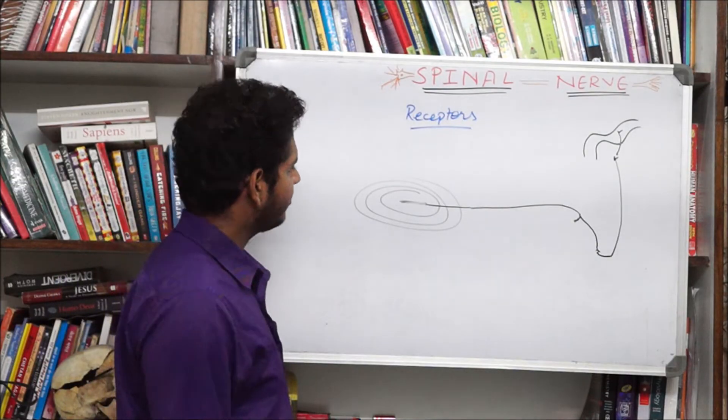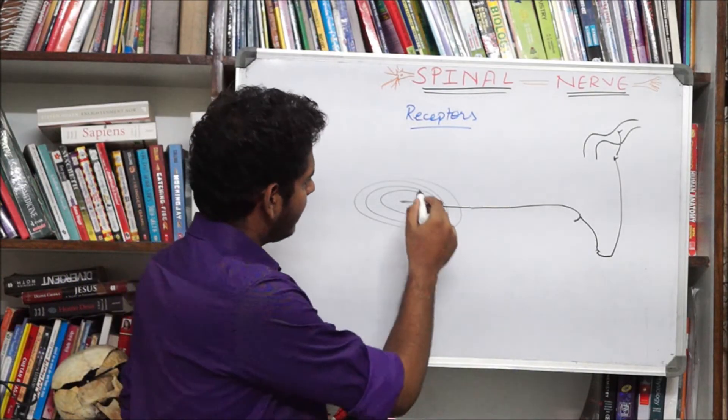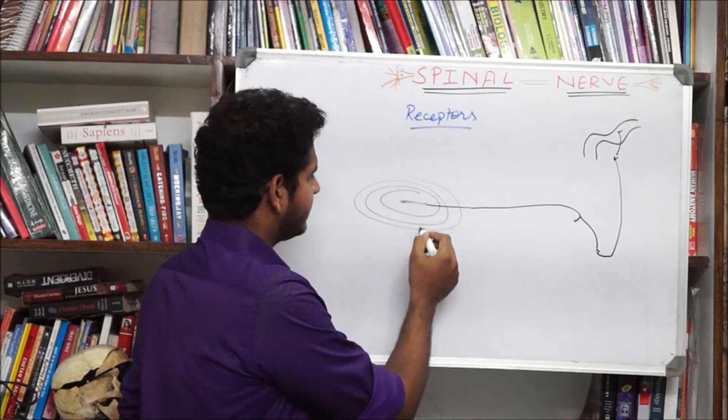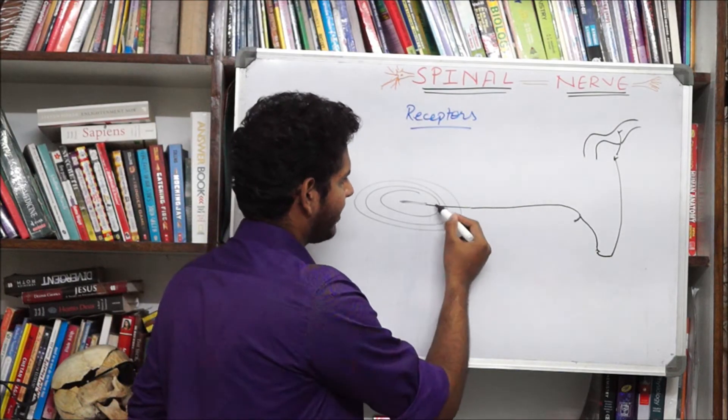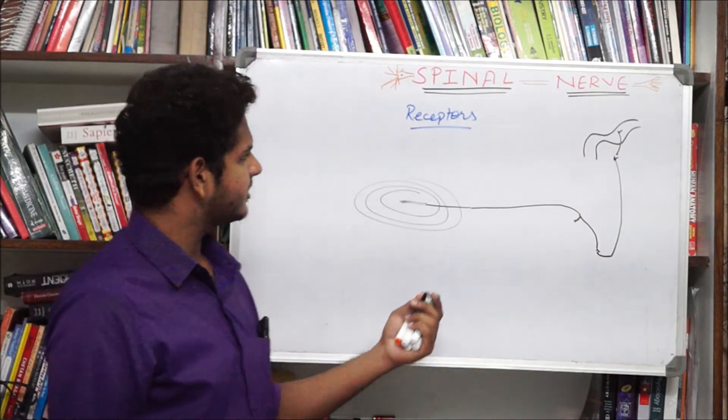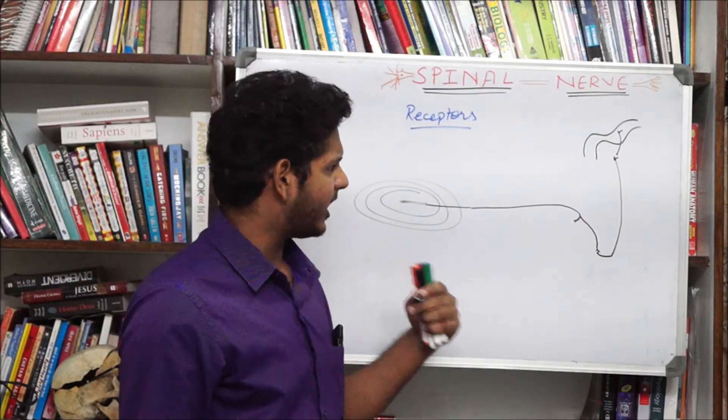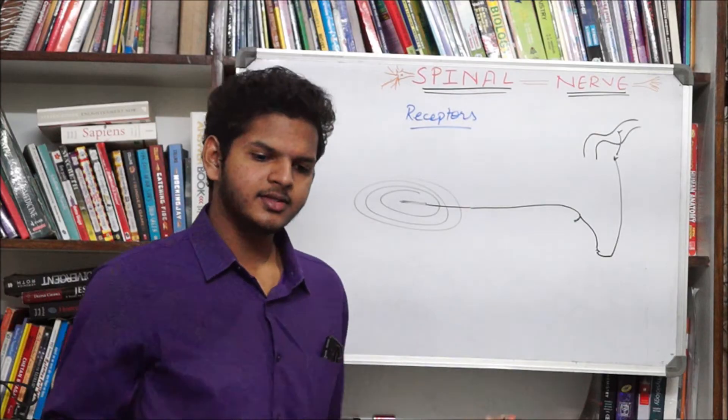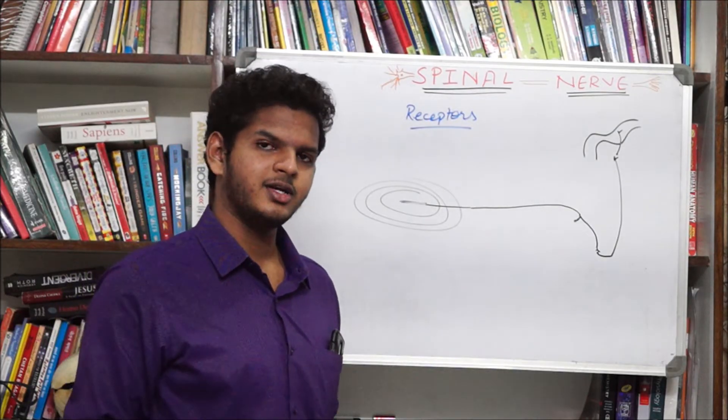So the point to be noted here is that any disturbance in these layers will cause this impulse to travel from here to the spinal cord and finally to the cortex. So this is the basic way of how the receptors work. There is a different classification of receptors. You may note it here.